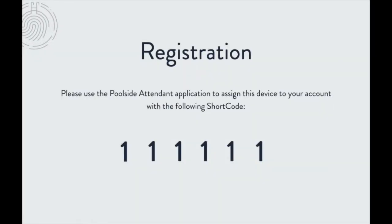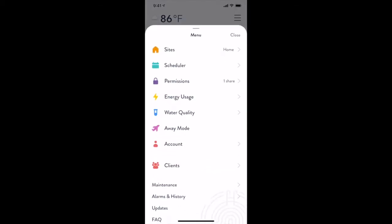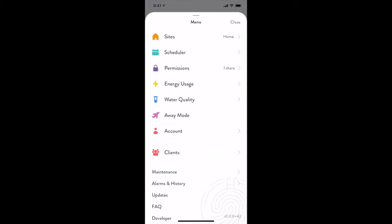Here you will be presented with a shortcode that you will need to enter into the mobile app in order to continue the setup process. Let's switch over to the mobile app now and add a new site. To do that, you use the hamburger menu, tap Sites, and tap the Add button.